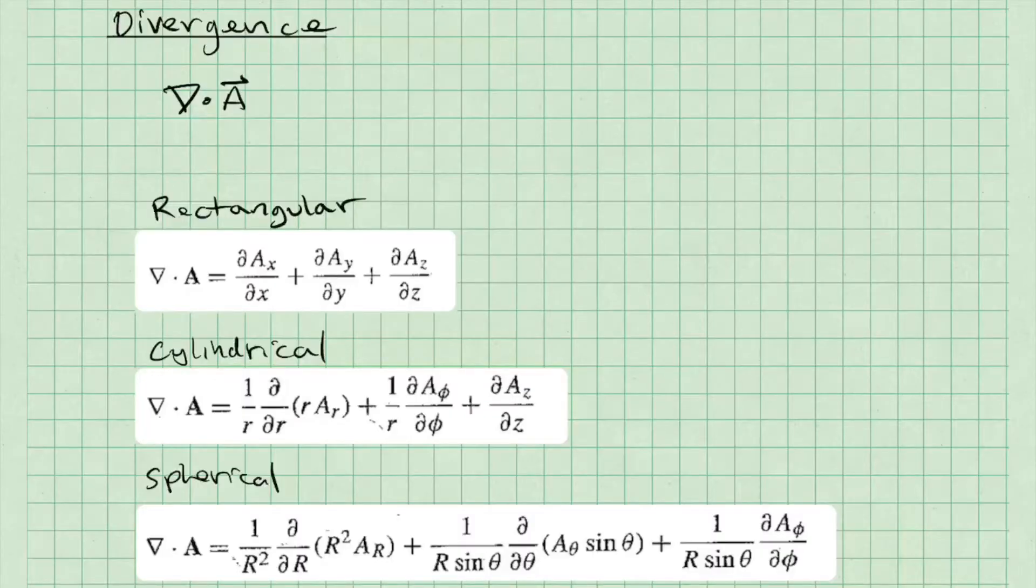Okay, in today's video we are going to talk about calculating the divergence of a vector field. The divergence is written as del dot A, where A is a vector field.